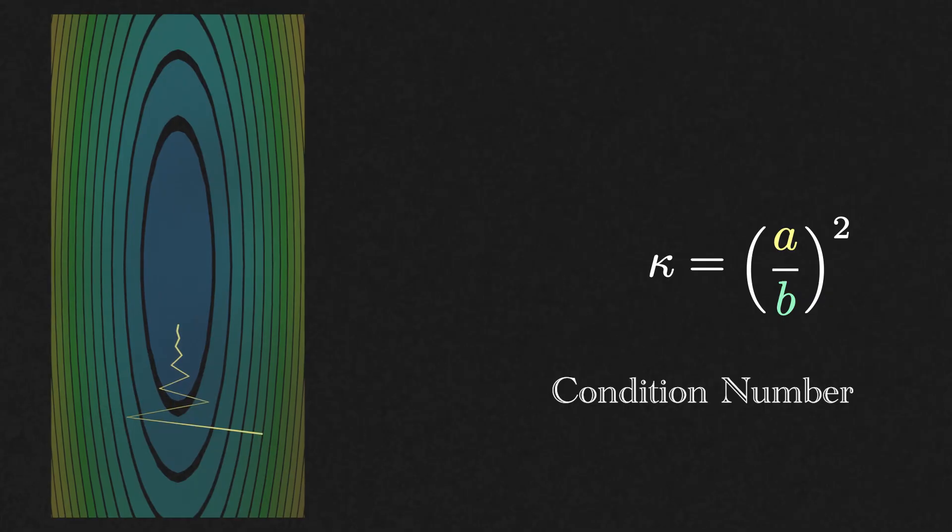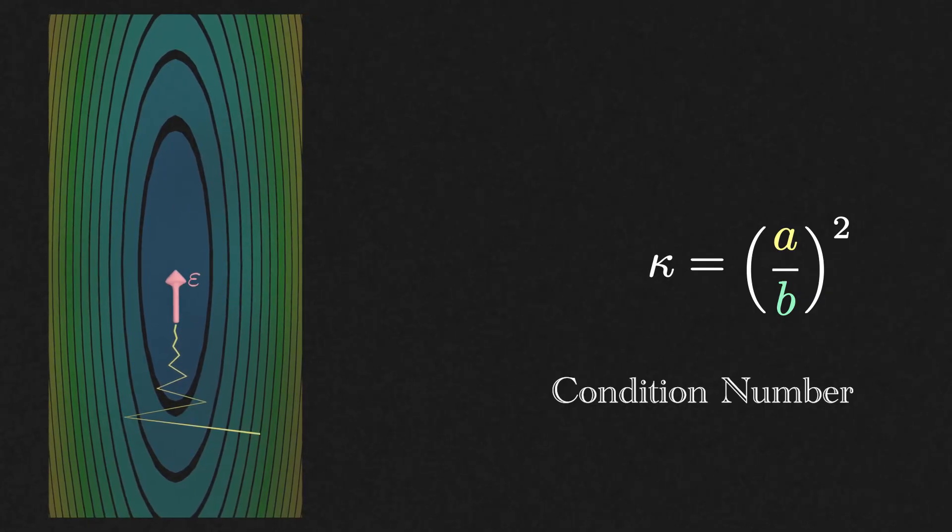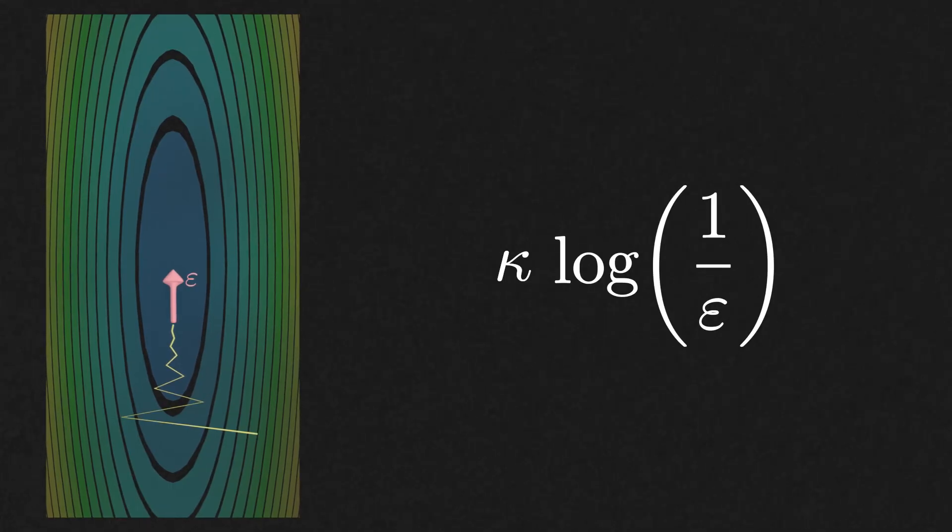This intuition can be formalized. It can be shown that in order to get to within epsilon of the minimizer, we need kappa times log 1 over epsilon iterations.